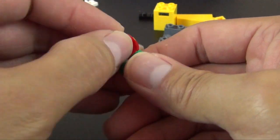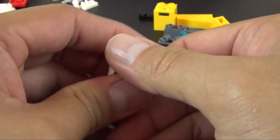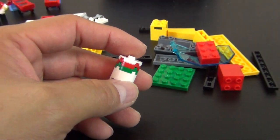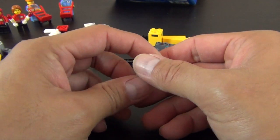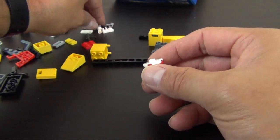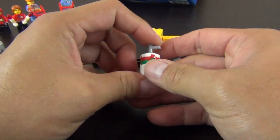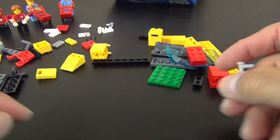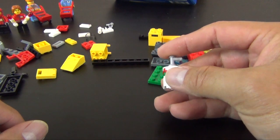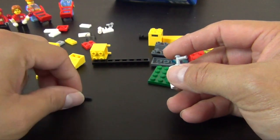These starter sets are truly almost just minifigure packs. Because they only cost about seven to eight dollars for these starter packs. And a single pack of a collectible minifigure costs four dollars. So you're actually getting twice as many minifigures plus all of these Lego parts for the price of two collectible minifigures.